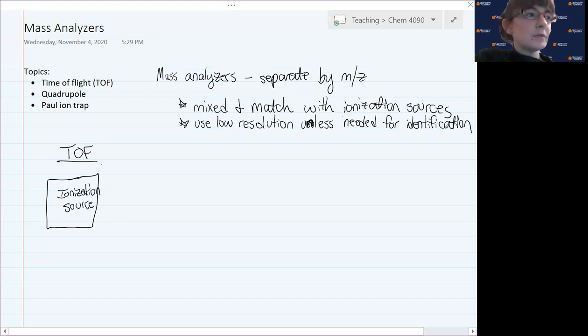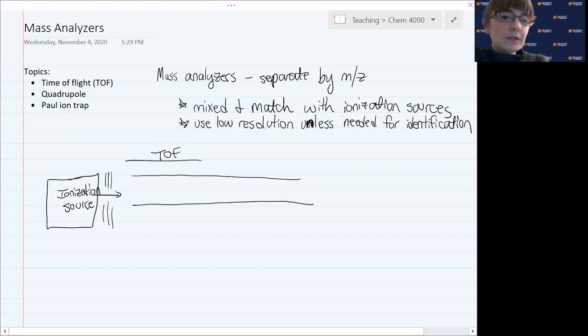You have your ionization source, which we've already learned several types of those that could be electron ionization or chemical ionization. That's going to be using various sets of electromagnetic fields to send ions into the next stage of the instrument, which is the mass analyzer. The time of flight will be essentially what you could consider a drift tube, a long tube, often a cylinder, usually in a linear pattern.